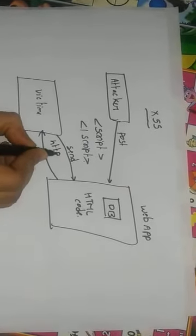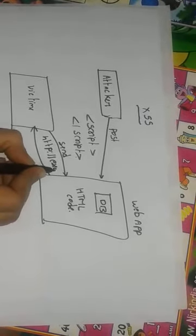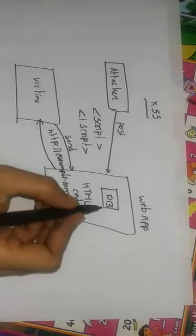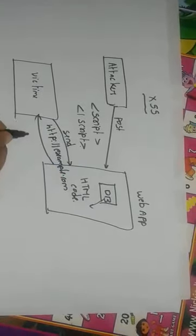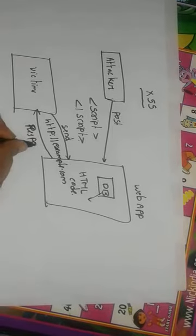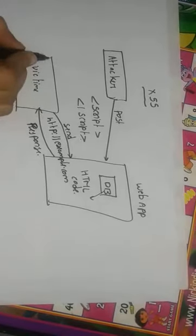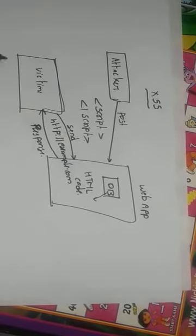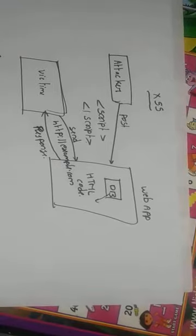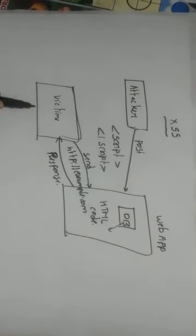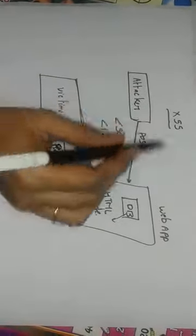For example, the victim sends a request like http://example.com. From the database, the malicious program is sent in the response message from the web server to the web browser. The attacker's page then opens within the victim's web page — indirectly, the attacker has hacked the victim's system using cross-site scripting.